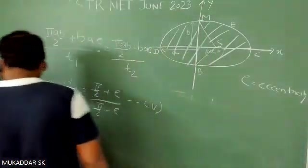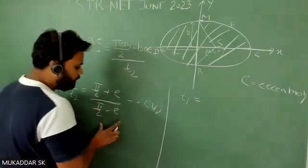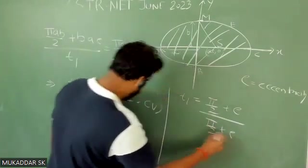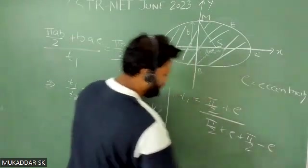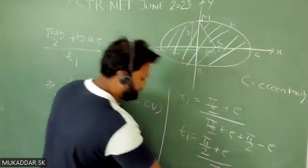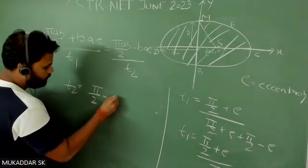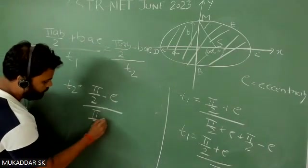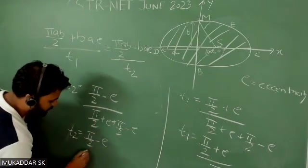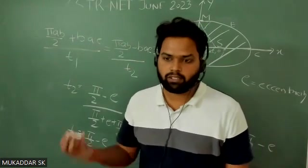We need to find t1 and t2 separately using the concept of componendo-dividendo. So t1 equals the numerator divided by numerator plus denominator: t1 = (π/2 + e) / [(π/2 + e) + (π/2 − e)] = (π/2 + e) / π. Similarly, t2 = (π/2 − e) / π.